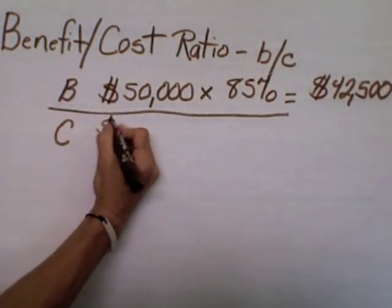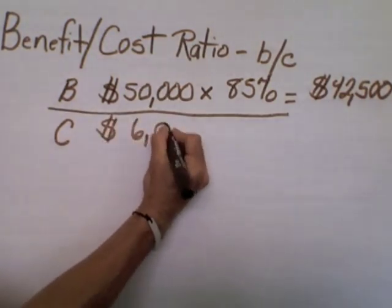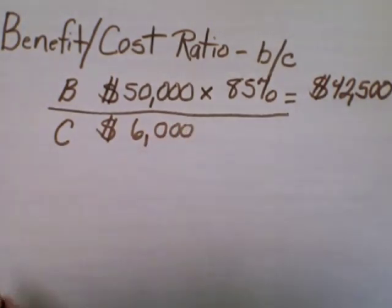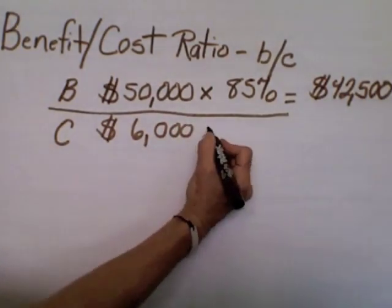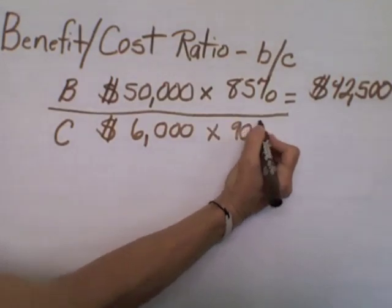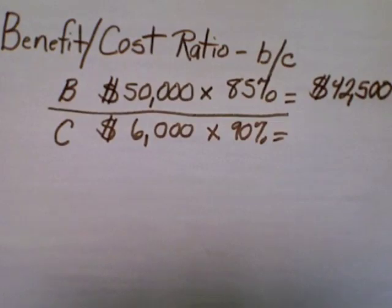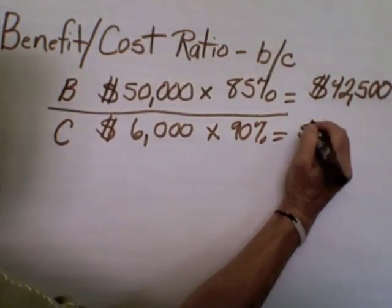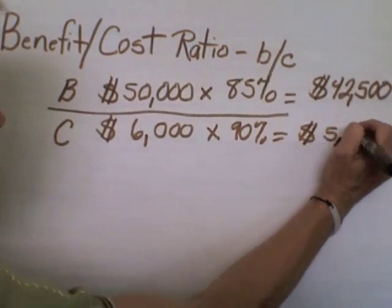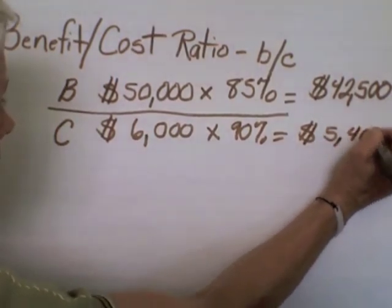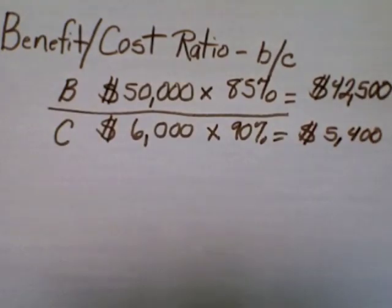Now let's go to the estimated cost. We calculate that this will be $6,000 worth of costs to create the project. And the probability that we can keep the budget at that amount is at 90% certainty. When we run this part of the equation, we see the expected value of costs is $5,400.